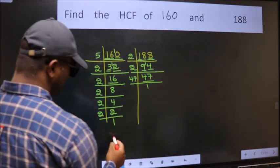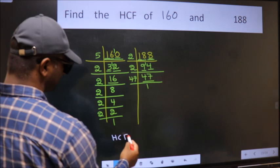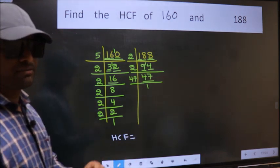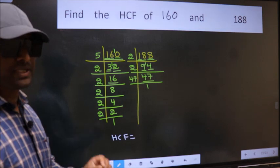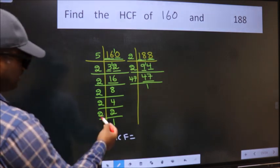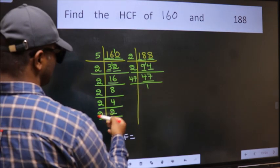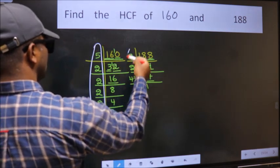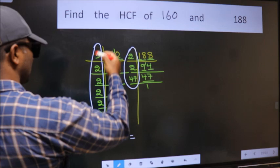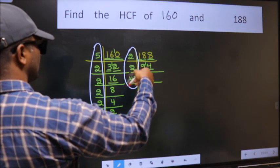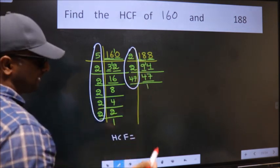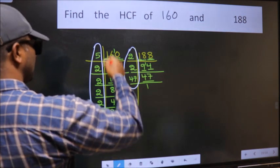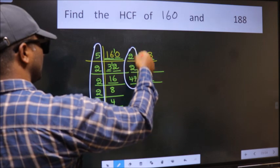Therefore, our HCF is the product of the numbers which should be present in these 2 places. Now let us find the numbers which should be present here and here.